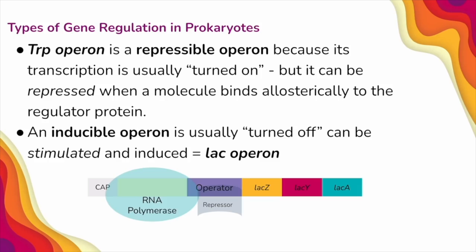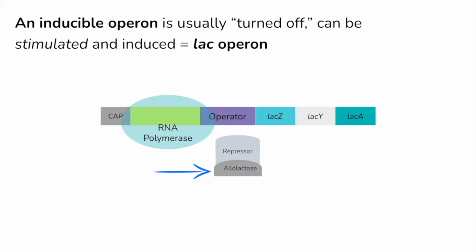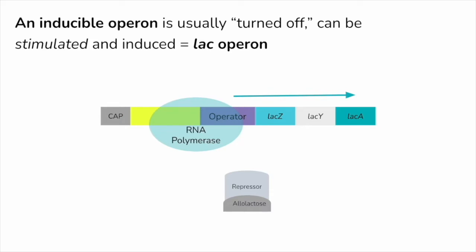There's lots of regulation of genes and transcription and translation. Some types of gene regulation in prokaryotic organisms include operons. Let's start with inducible operons. In its usual state, we do not have transcription happening because we have a repressor bound to the operator. The purpose of these genes is to provide instructions to digest lactose. When lactose shows up, allolactose can bind to the repressor, removing it from the operator. This allows RNA polymerase to move down the operon, and transcription can occur.